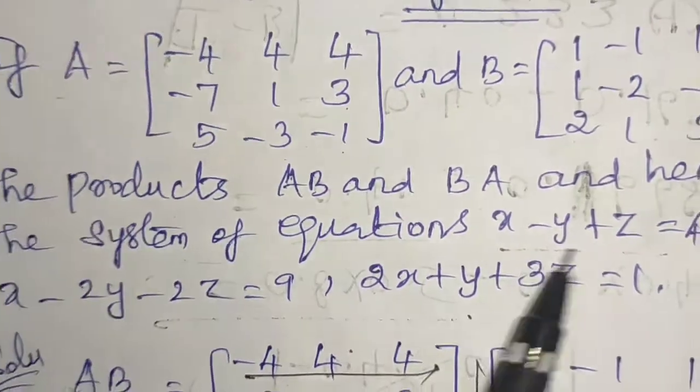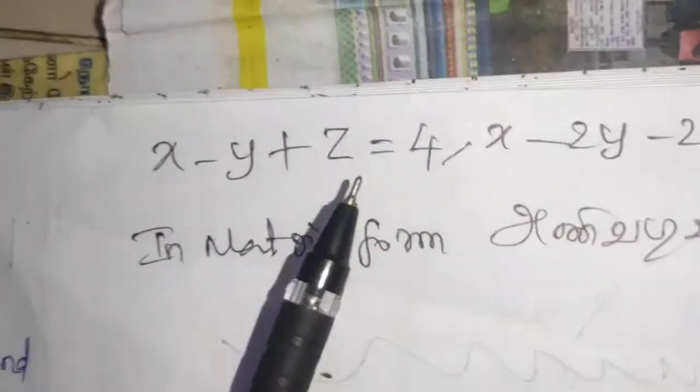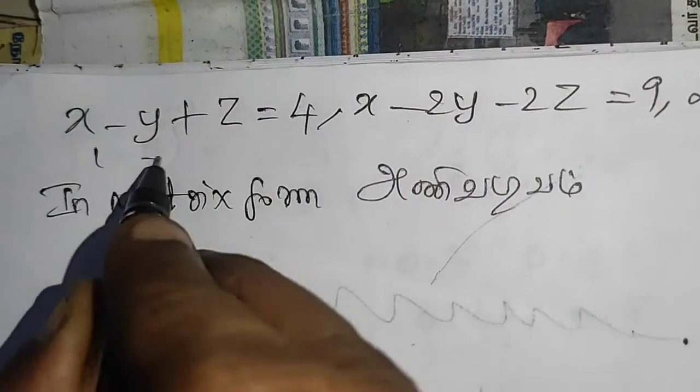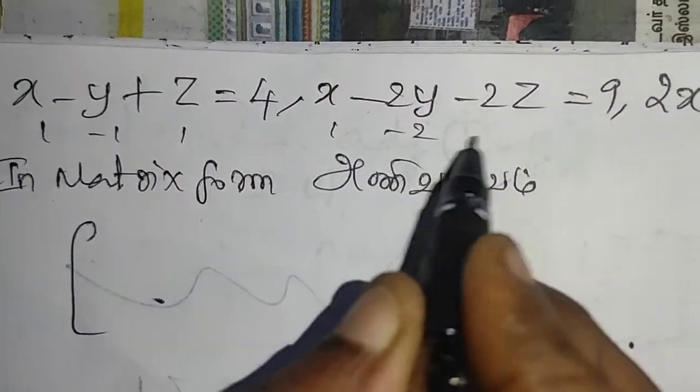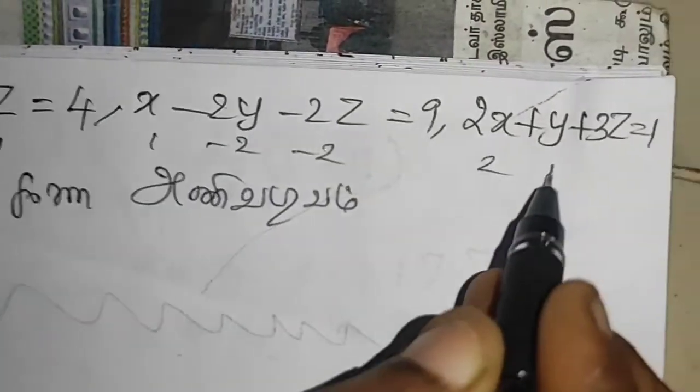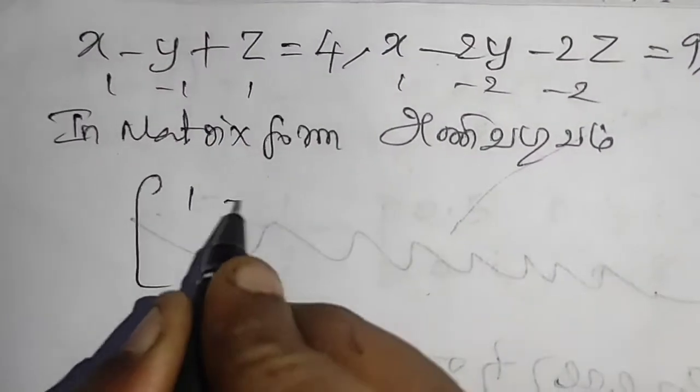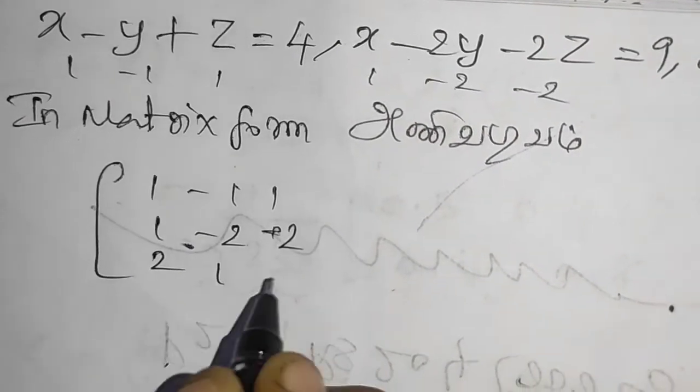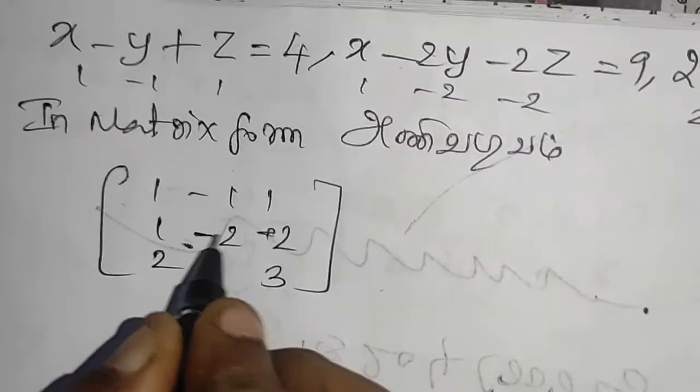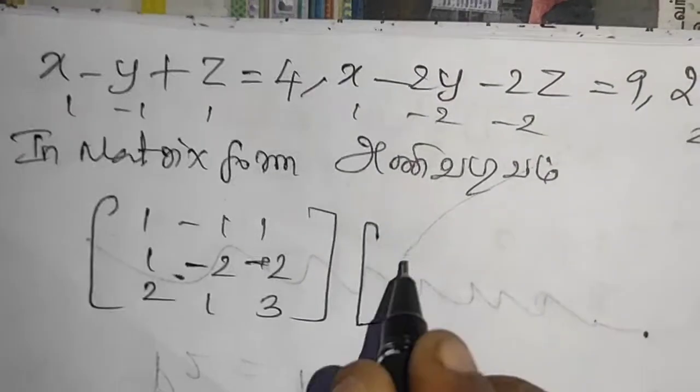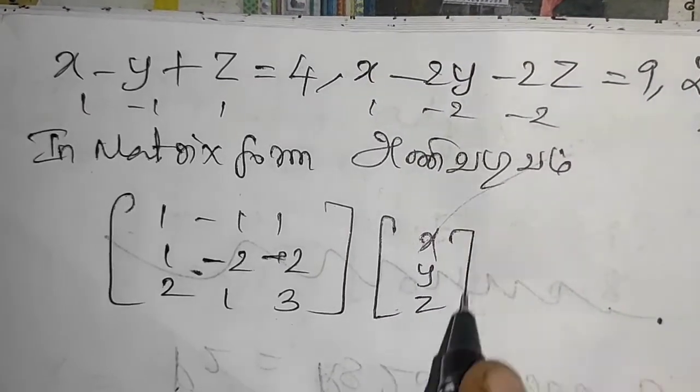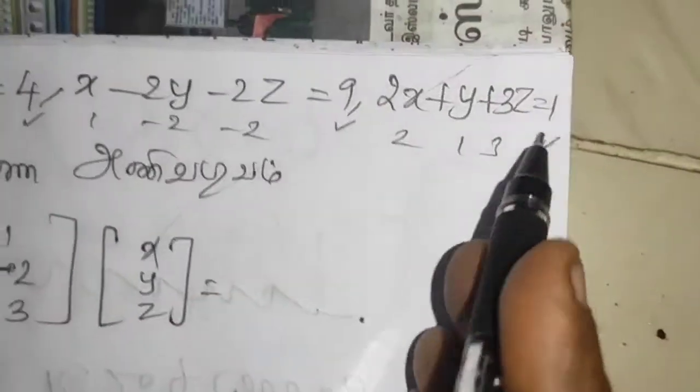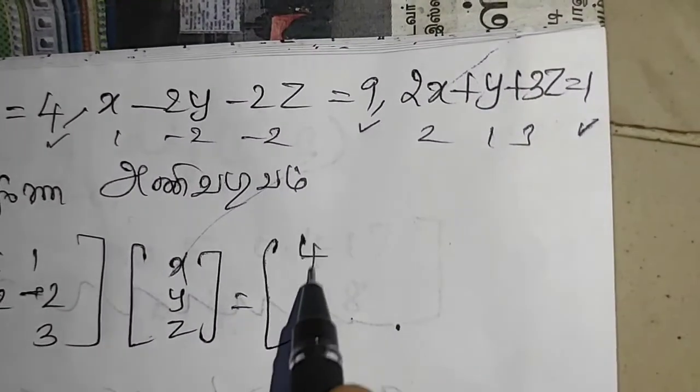Now solve the system of equations. Write it in matrix form: the matrix 1, minus 1, 1, 1, minus 2, minus 2, 2, 1, 3, times x, y, z equals 4, 9, 1. This is A times x equals B.